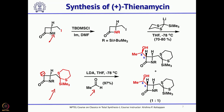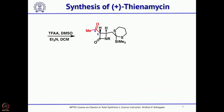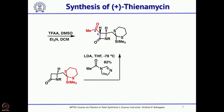The aldol gave a 1:1 mixture at the hydroxyl-bearing carbon, while the other stereocenter was fixed. The mixture was oxidized to the ketone. Alternatively, in a single step, the lactam was treated with LDA and N-acetylimidazole to give the same ketone product. Reduction of this ketone with K-selectride gave a 9:1 ratio of the desired product over the unwanted isomer.